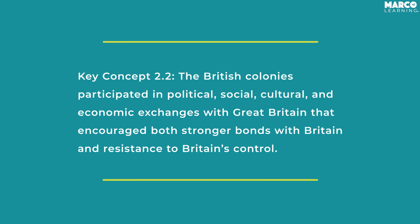All the ideas we've been discussing — mercantilism, the slave trade — point to the central tension of Key Concept 2.2. On the one hand, the British had this huge transatlantic empire with a unified culture. On the other hand, the American colonies are starting to think for themselves, establishing their own governing institutions and their own ideas of what they could be. And that's what takes us to the American Revolution of the 1760s and 70s.